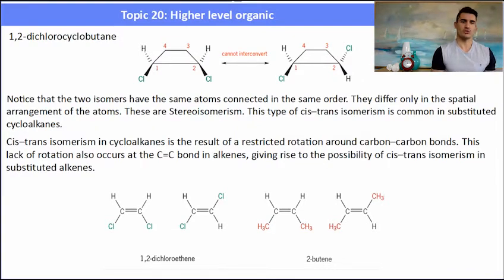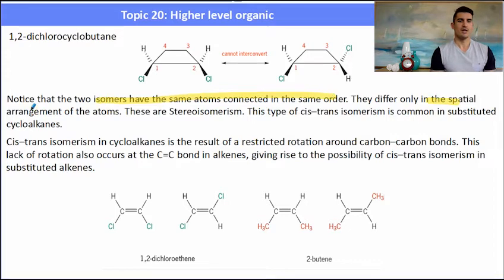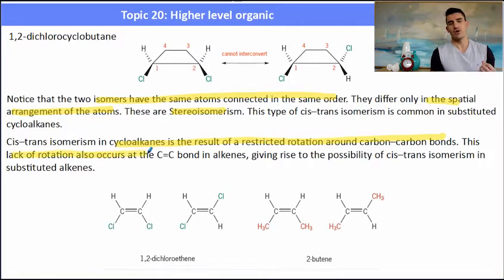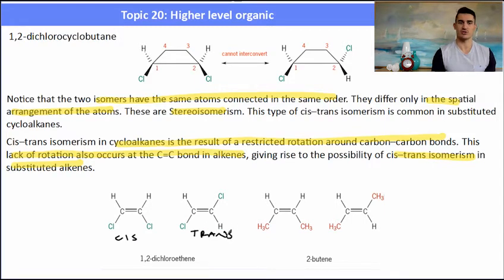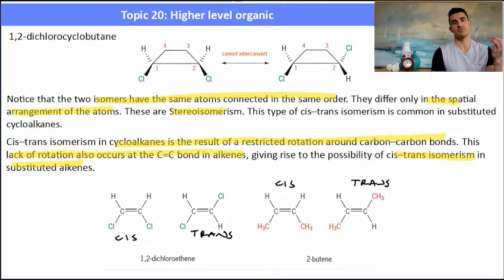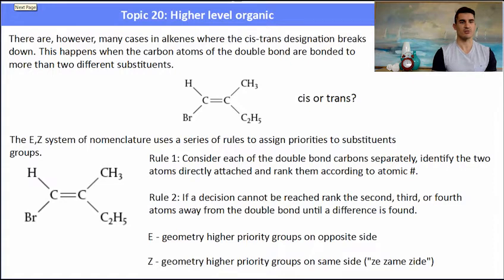Another example is 1,2-dichlorocyclobutane — butane being a four-membered ring. We could have both chlorines at the top, or one at the top and one at the bottom. They're still isomers because they have the same atoms connected in the same order; they just differ in their spatial arrangement — those are stereoisomers. We can also have alkenes with this kind of stereoisomerism: a carbon-to-carbon double bond has a restriction in its geometry as well. If we have two groups on the same side, that's cis; one at the top and one at the bottom is trans.